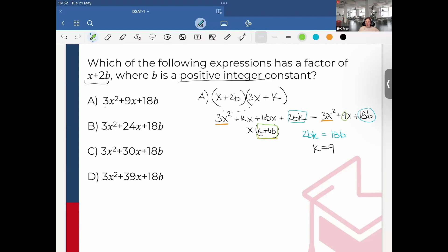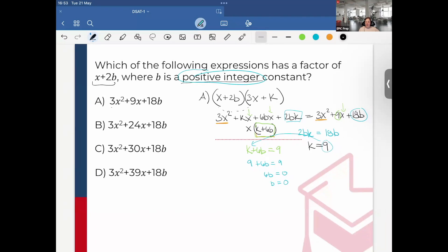I know k = 9, and then I also know that k + 6b must equal 9 because they each have x in front of them. So k + 6b = 9. I've solved for k, so I substitute: 9 + 6b = 9. I get 6b = 0, so b = 0. However, I want b to be a positive integer constant.